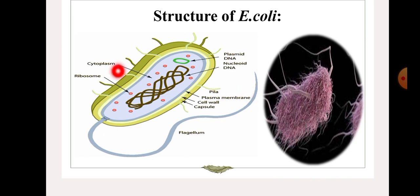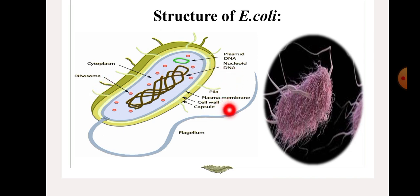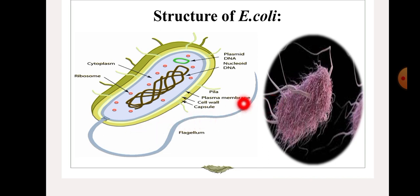Moving to the next slide — structure of E. coli. This image shows the structure of E. coli. E. coli has cytoplasm, ribosomes, plasmid DNA, nucleoid DNA, pili, plasma membrane, cell wall, capsule, and flagellum. The flagellum helps to move the bacteria.